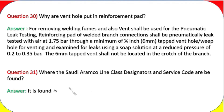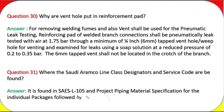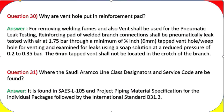Question 31: Where are the Saudi Aramco line class designators and service codes to be found? Answer: They are found in SAES-L-105 and the project piping material specification for the individual packages, followed by international standard ASME B31.3.